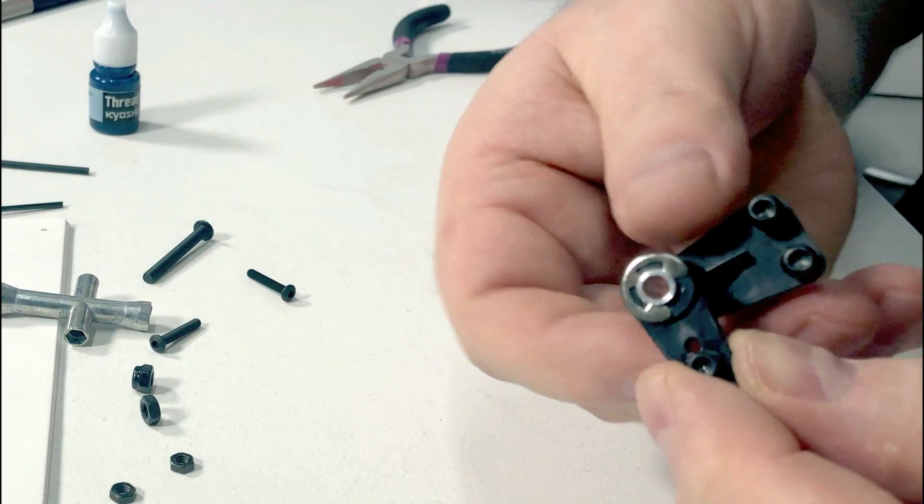Then we've got our hex adapters. Now on the hex adapter you've got a threaded side with a bigger hole and a smaller hole on the other side, so take note of that. And we've got our little screw that's like a pin with a grub screw on one end. So we can put them in and tighten them up. And that's it, our hex adapter's on there. Now we can do the same with the other side.